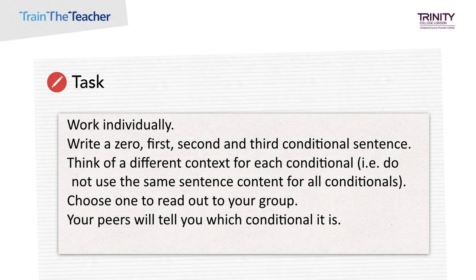Now have a look at question 5 on your task sheet, which looks at first and second conditional sentences. First identify which conditional each sentence is, then choose which function each sentence represents from the choices provided in the box. Check with your peers to see if you came up with the same answers. Then for question 6, write a zero, 1st, 2nd and 3rd conditional sentence, thinking of a different context for each. Choose one to read out to your group — your peers will tell you which conditional it is. Pause the video and do this now.